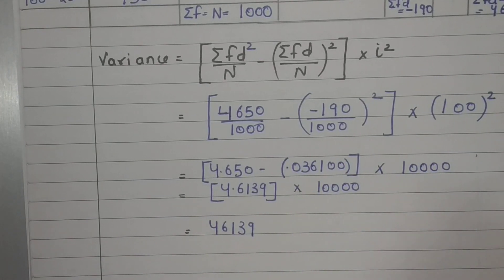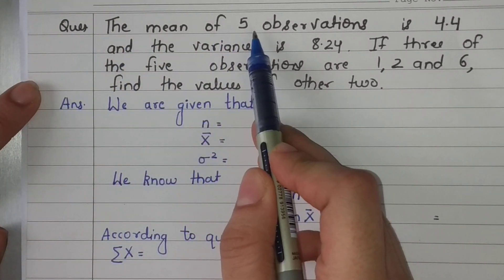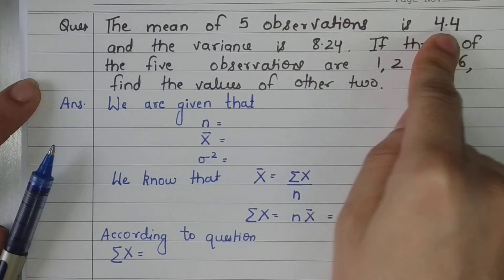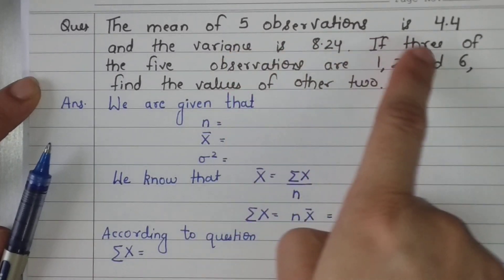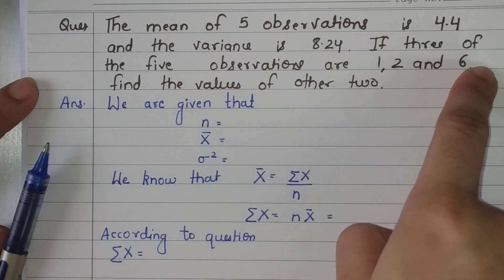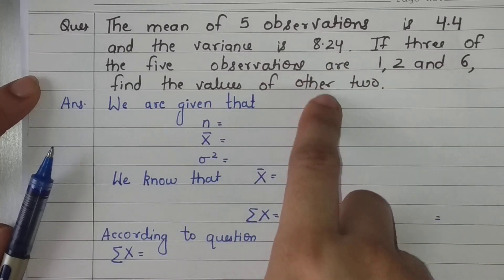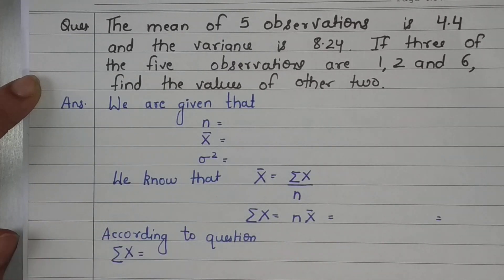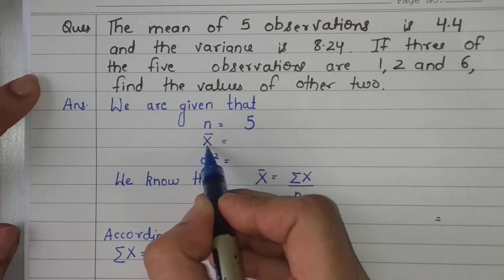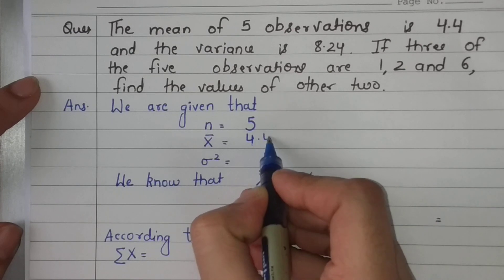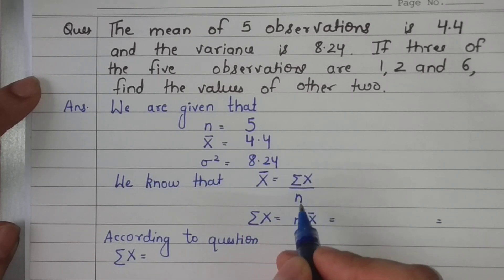Now the second important question: the mean of five observations is 4.4 and the variance is 8.24. Three of the observations are 1, 2, and 6; two are missing. We are given n = 5, mean = 4.4, variance = 8.24. Using sigma x = n × x̄ = 5 × 4.4 = 22.